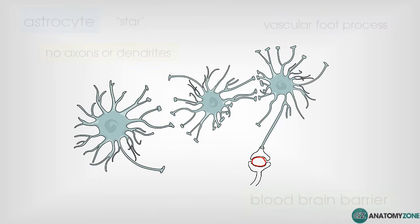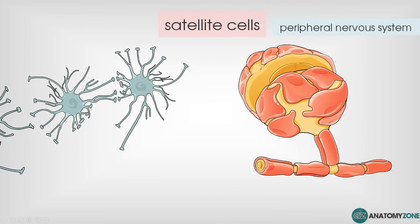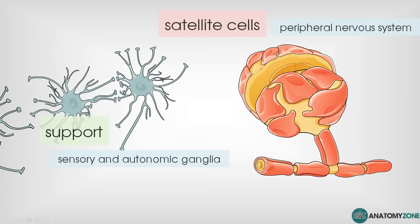Similar to astrocytes are the satellite cells in the peripheral nervous system. Astrocytes are in the central nervous system and satellite cells are in the peripheral nervous system — they have a similar broad supportive role. Satellite cells are found surrounding sensory and autonomic ganglia in the peripheral nervous system. Autonomic refers to the parasympathetic and sympathetic divisions. These cells are thought to regulate the microenvironment of those ganglia.